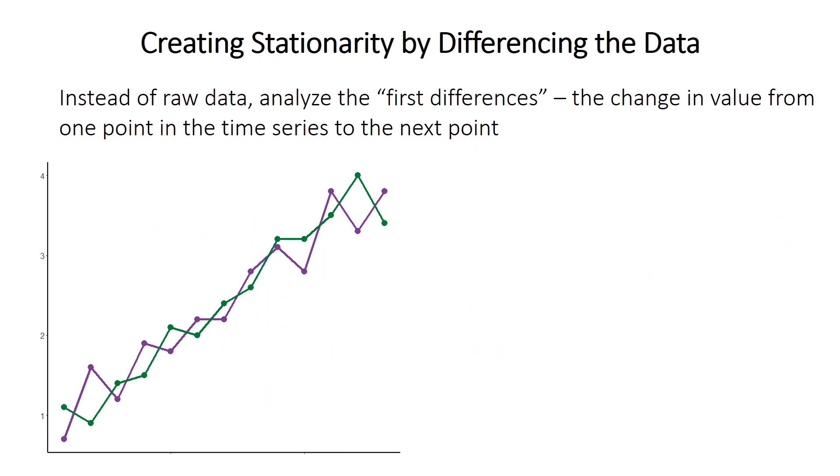So what to do with time series data? Well, one very simple option is to do something called differencing the data. So instead of doing a correlation or a regression on the raw data values, we're going to use the change in value from one point in the time series to the next point.